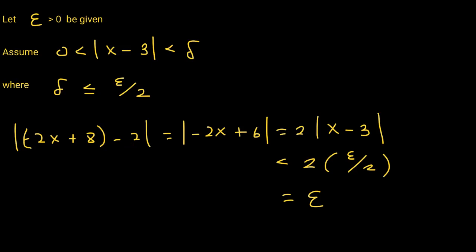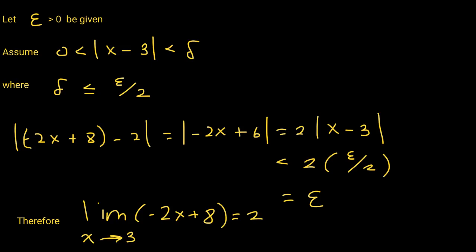We have proven this statement: the limit of negative 2x plus 8, as x approaches 3, is 2. Great job!